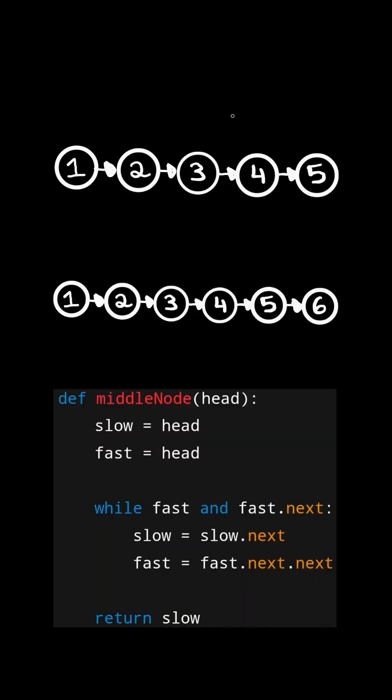First, consider the code below. We will have a slow and a fast pointer initialized to the head of the linked list.